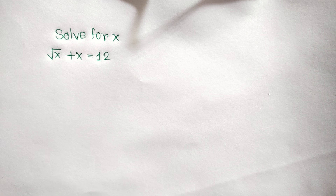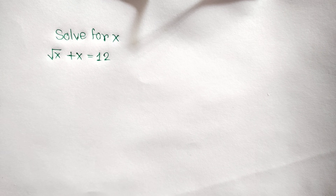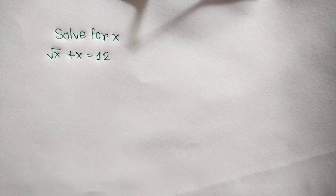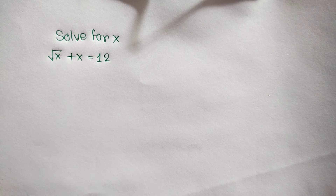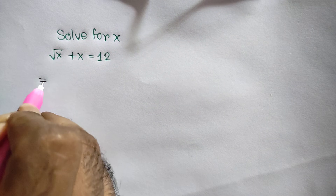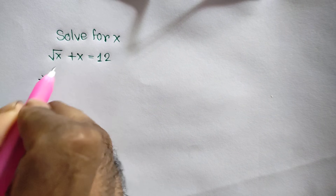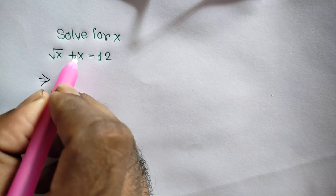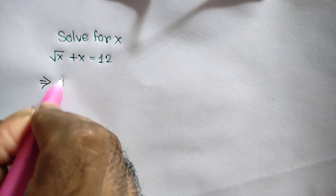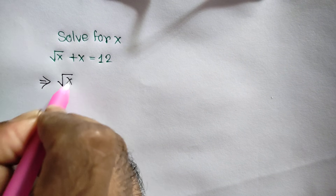Hi everyone. In this video I am going to show how to find the value of x where square root of x plus x is equal to 12. Taking this positive x to the right side, we will get square root of x is equal to 12 minus x.